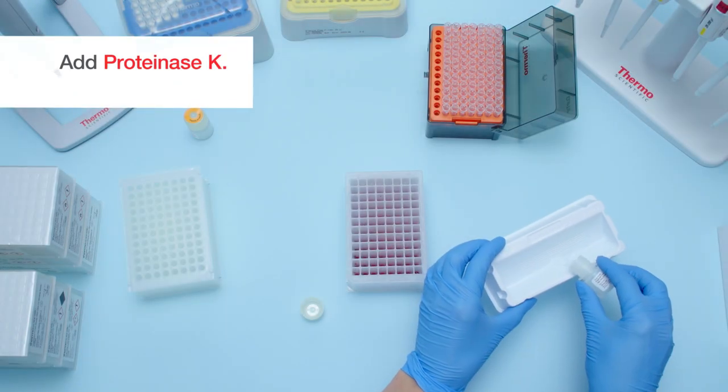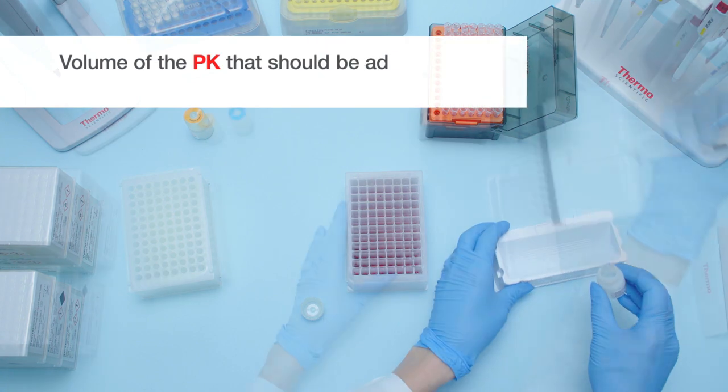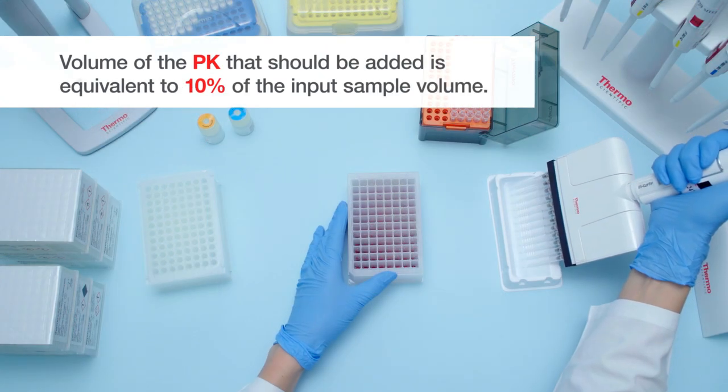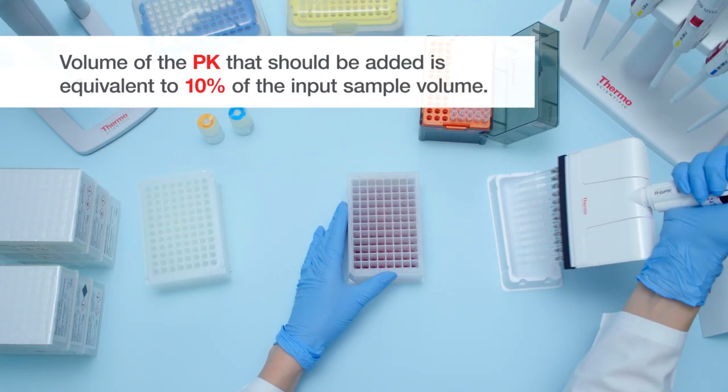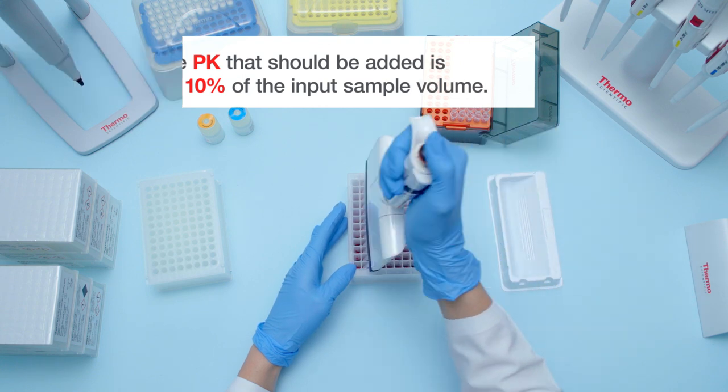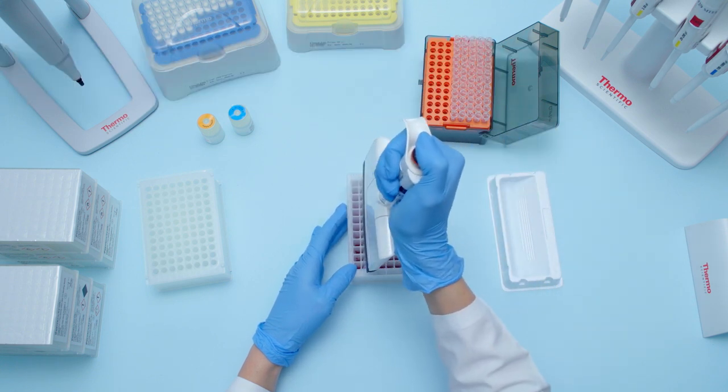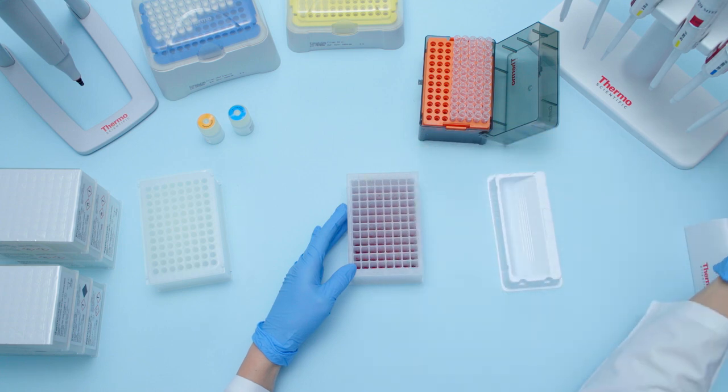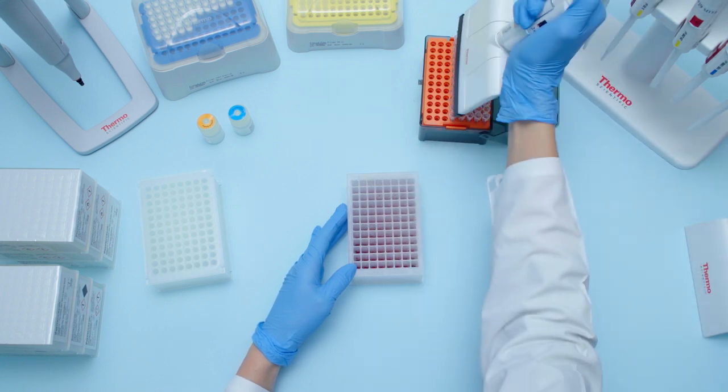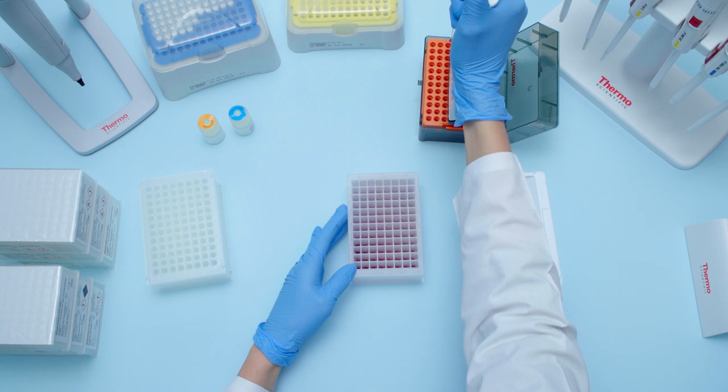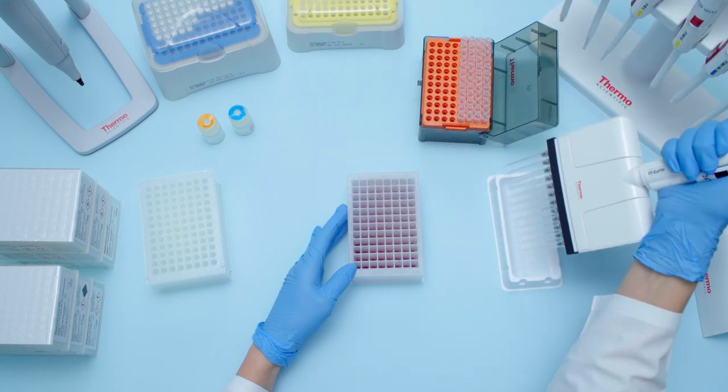Add Protease K to each well. The volume of the Protease K that should be added is equivalent to 10% of the input sample volume. Adding the reagents in this order is important. No mixing or shaking is required if the Enhancer is added to the input plate first. Do not pre-mix the Enhancer and the PK.